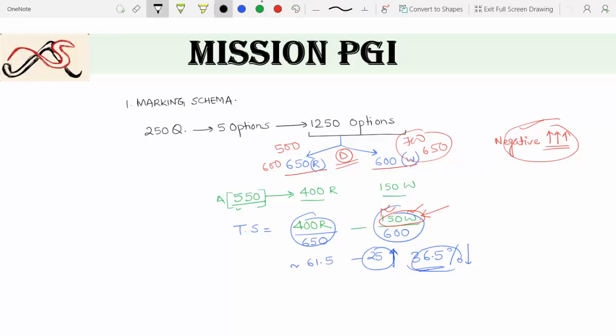We know that the PGI exam is of three hours duration, and there are 1250 options that you must go through in these three hours. Now if you see practically, three hours is a very limited time for one to carefully see, analyze, and then mark on an OMR sheet out of these 1250 options.